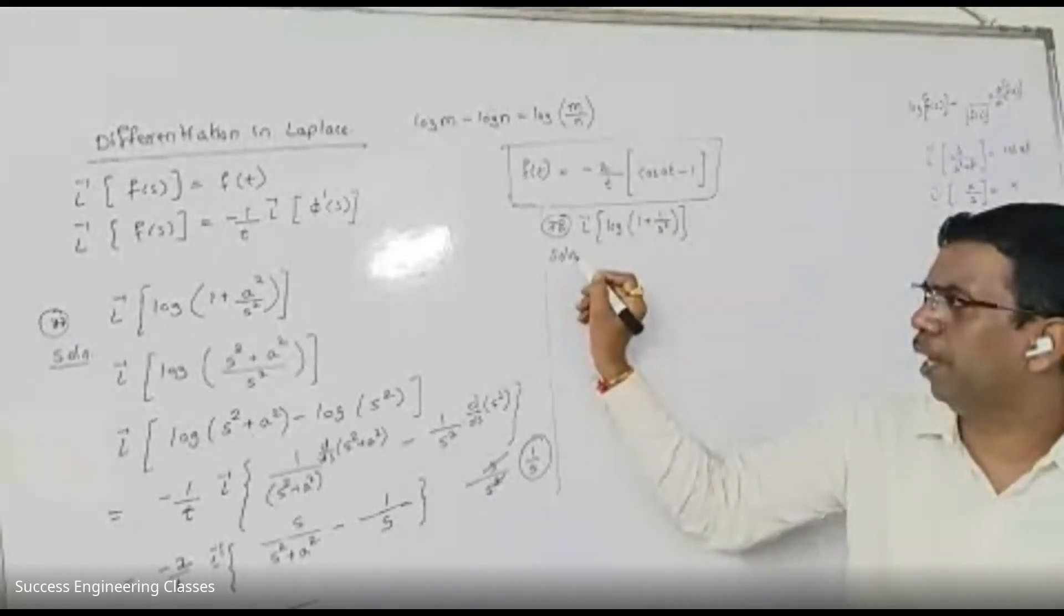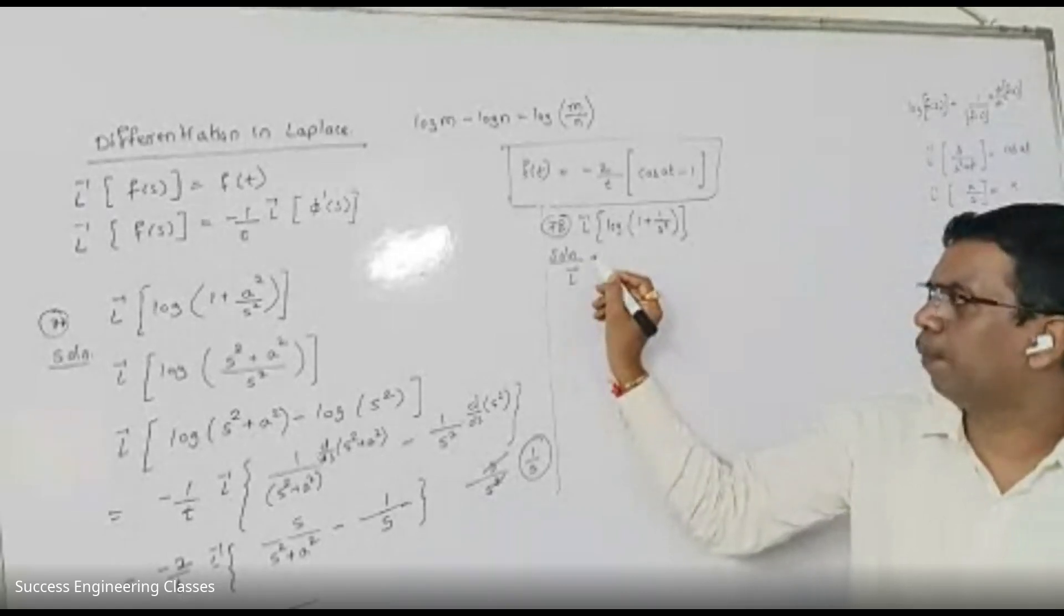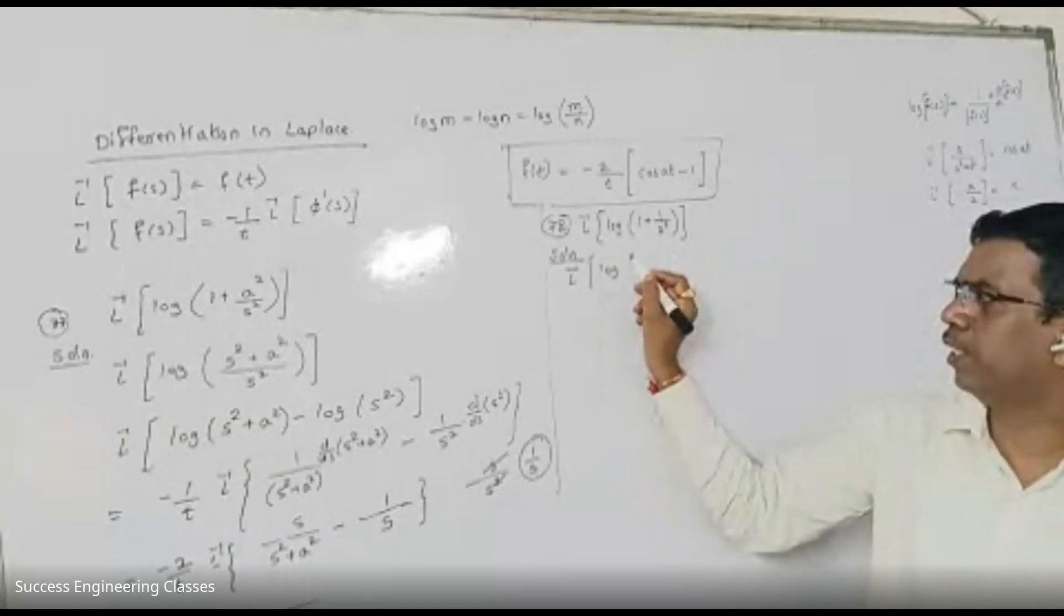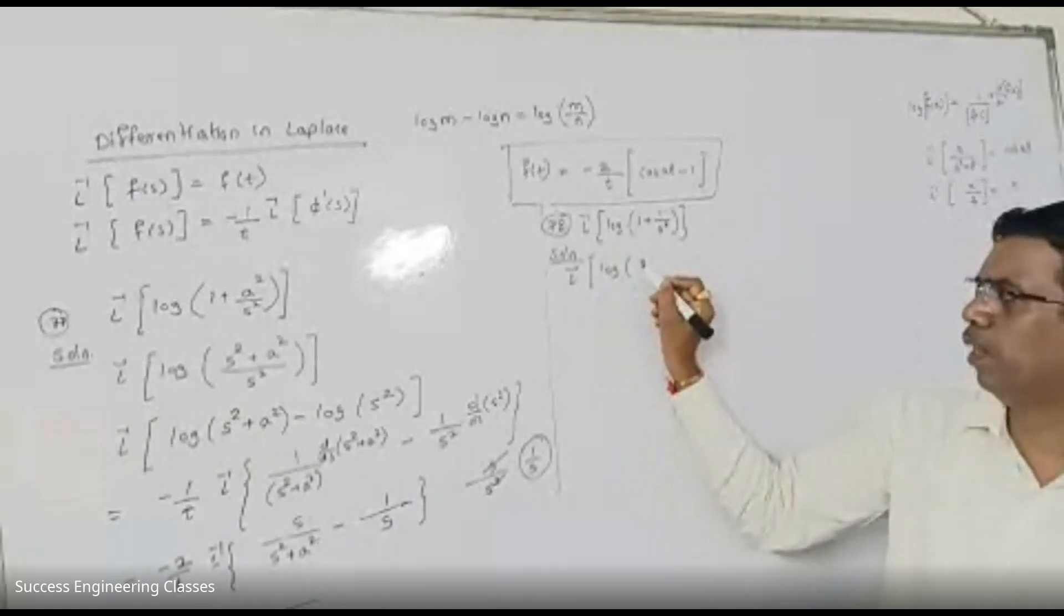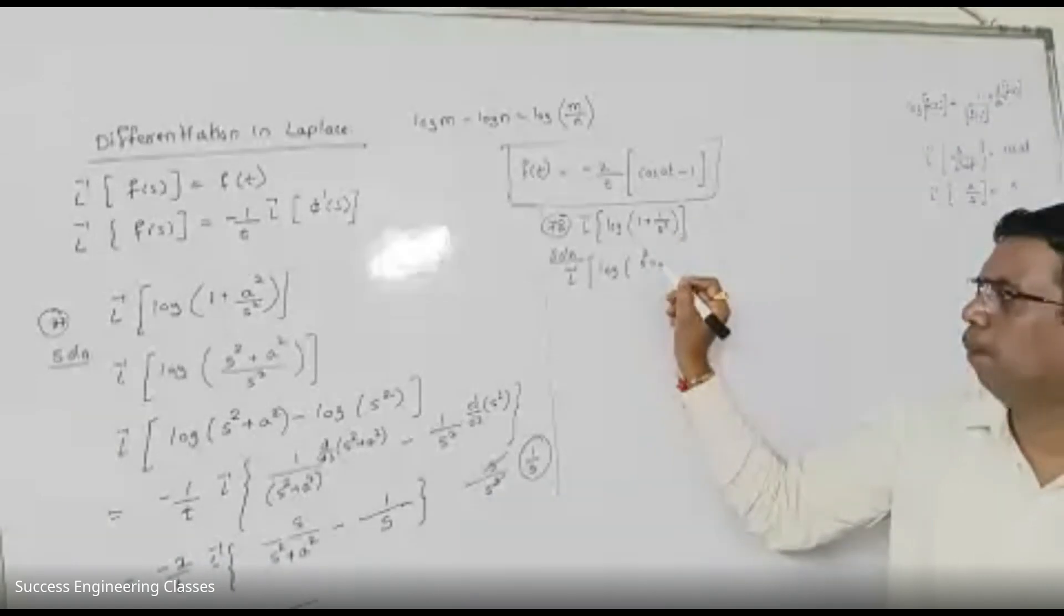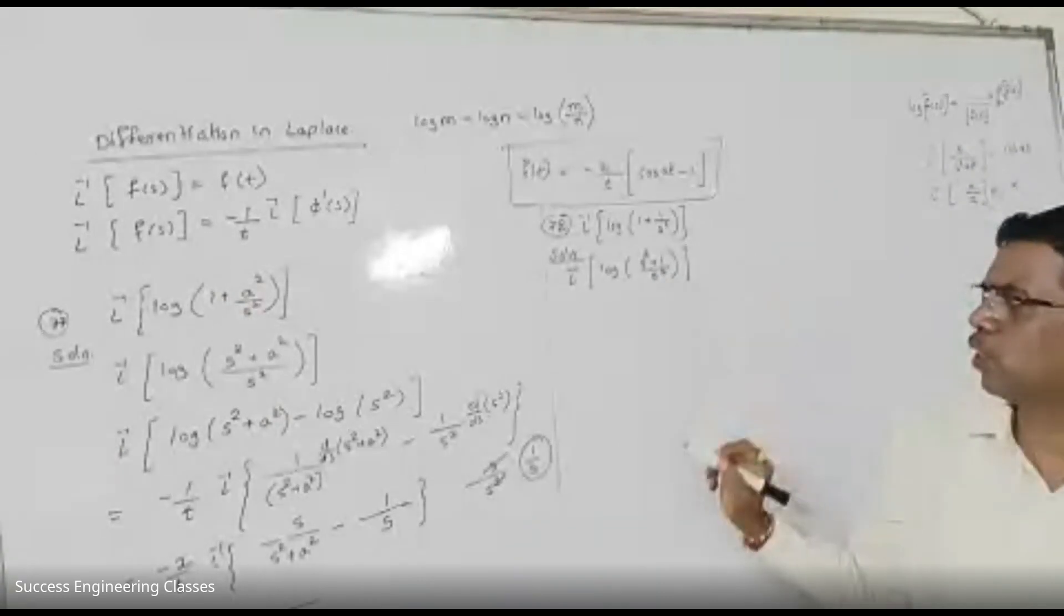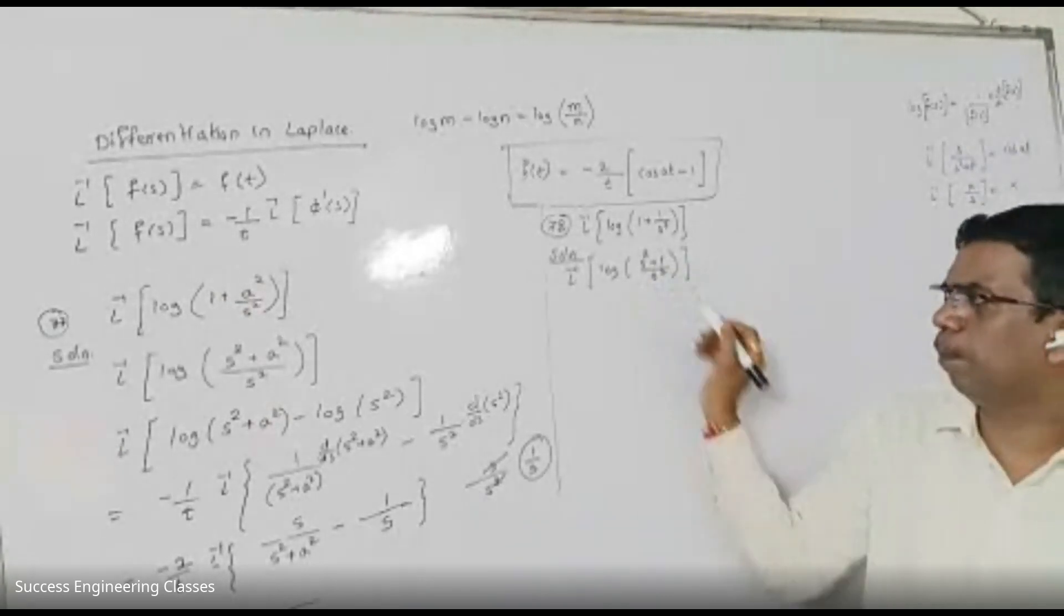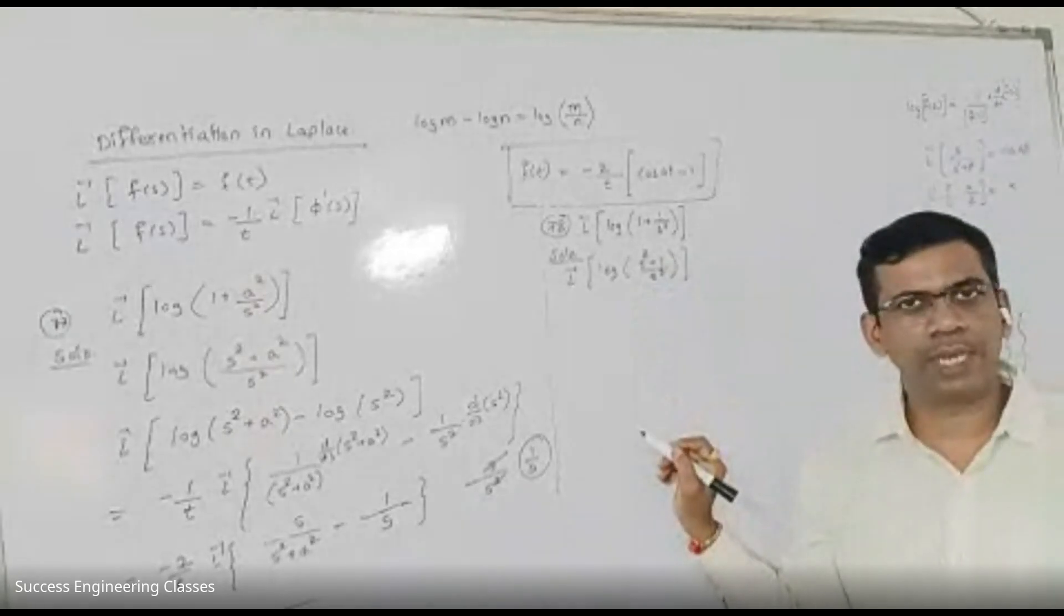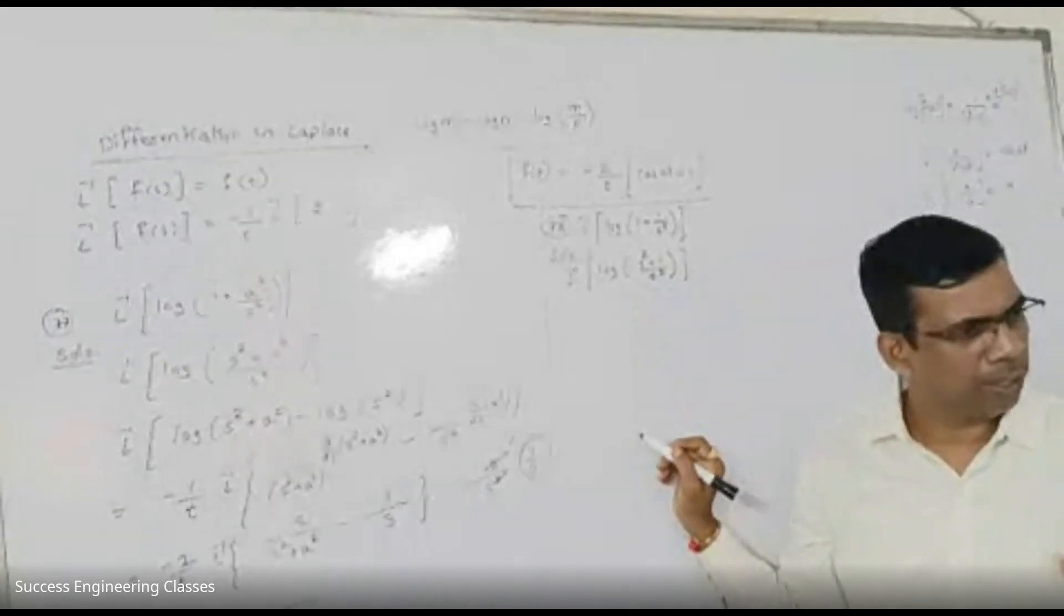We will see that the solution Laplace inverse of log remains as it is. A square into 1 will get A square plus 1 divided by A square. So, A square plus 1 upon A square. Let's move on.